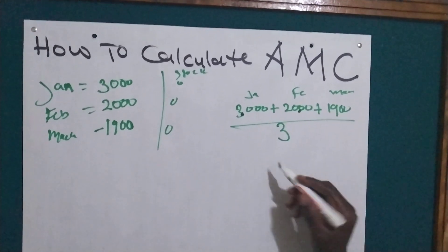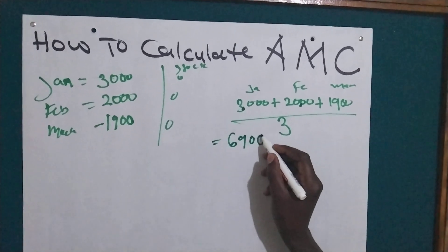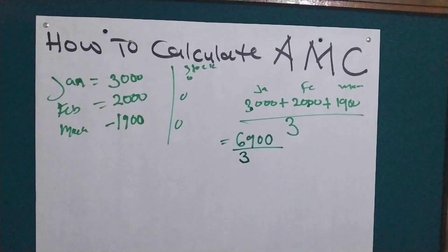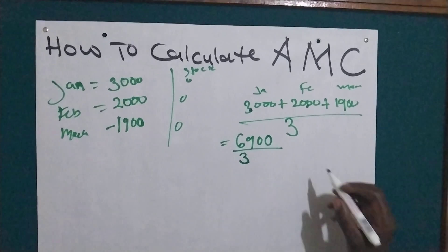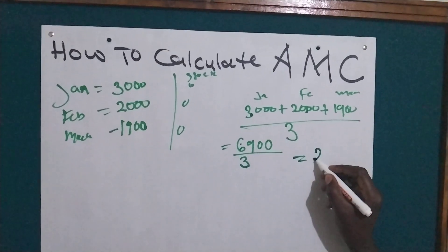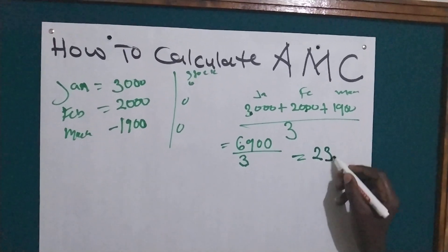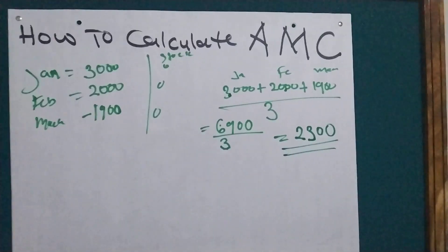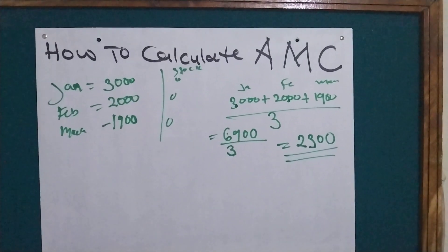The total is 6900. We divide 6900 by 3, and our average monthly consumption is 2300. So 2300 is our average monthly consumption of your commodities.